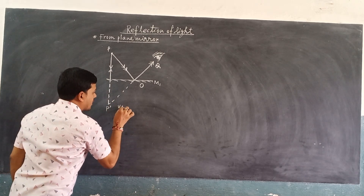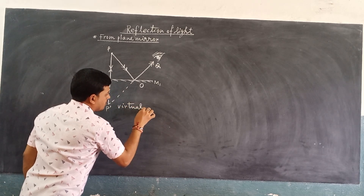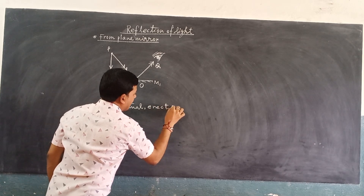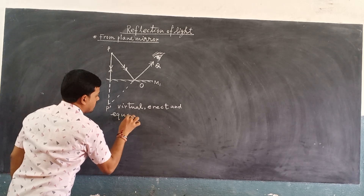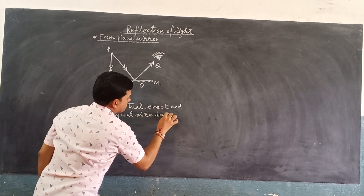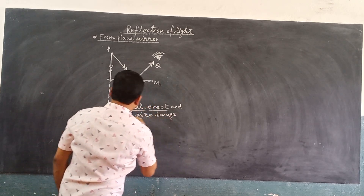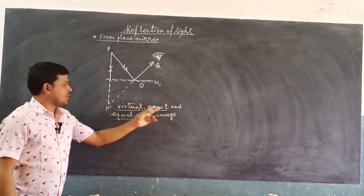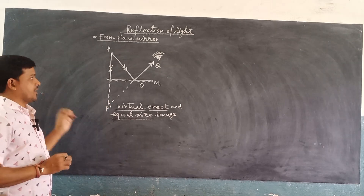The image formed is virtual, erect, and of equal size. These are the basic properties or characteristics of the image formed by a plane mirror: virtual image, erect image, equal size image, formed just behind the mirror.